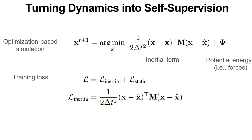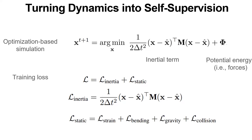First, an inertial term that intuitively prevents the change of garment vertex velocities over time. However, garment velocities will change anyway due to the underlying body motion, which makes dynamics and wrinkle effects appear. Second, a static term that models the potential energy, which includes internal and external forces that affect the garment.